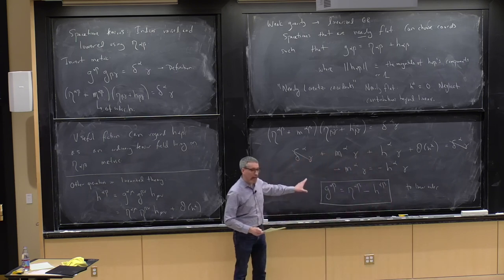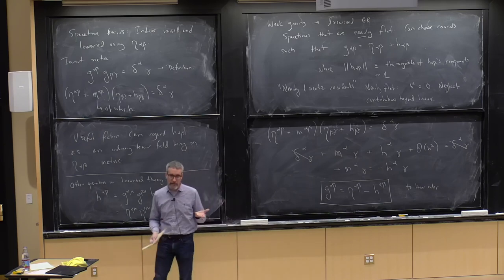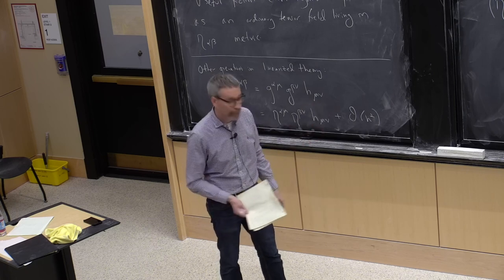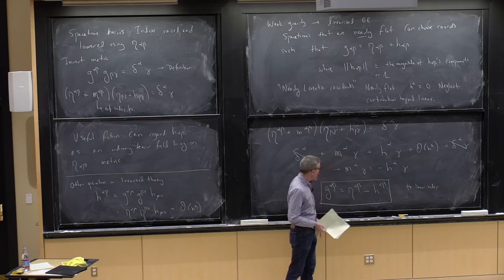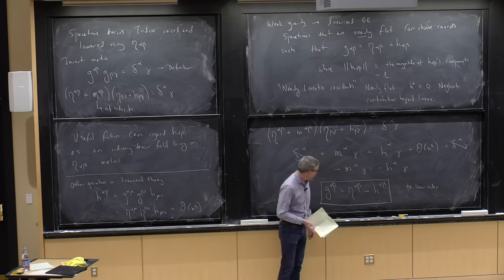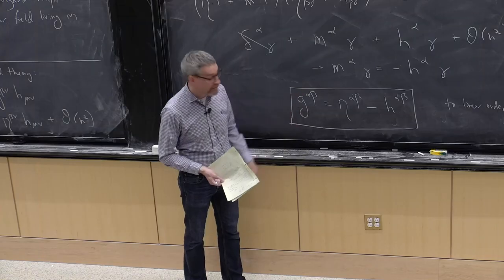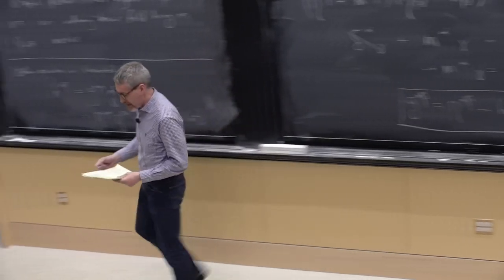This is essentially the tensor equivalent of a binomial expansion: 1/(1+ε) ≈ 1−ε. But this is important to get right — I'll remark anecdotally that when working with graduate students on linearized theory projects, getting the sign wrong here is one of the most common mistakes people make.